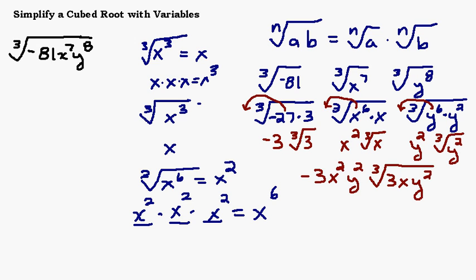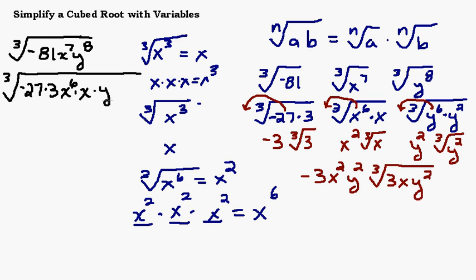If you're comfortable with what's going on, you can keep it all together under the same radical. You could say the perfect cube that goes into 81 is negative 27, so you'd multiply that by 3. For x to the seventh, you want to split it into a multiple of 3 — the greatest multiple of 3 less than 7 is 6 — so split it into x to the sixth and x. For y to the eighth, the greatest multiple of 3 before going over 8 is 6, leaving a y squared to make up y to the eighth.